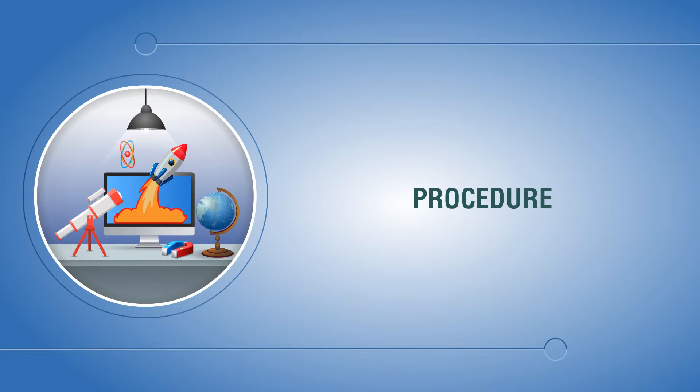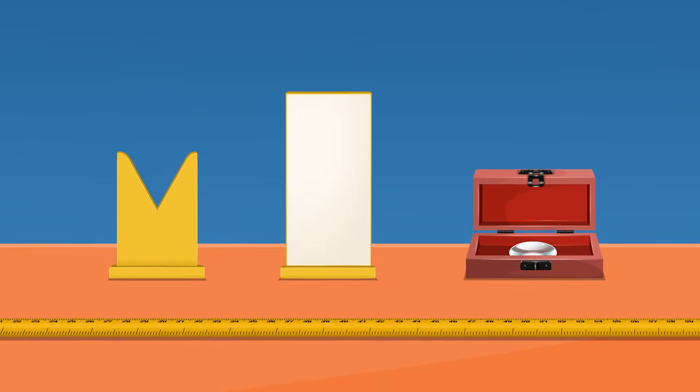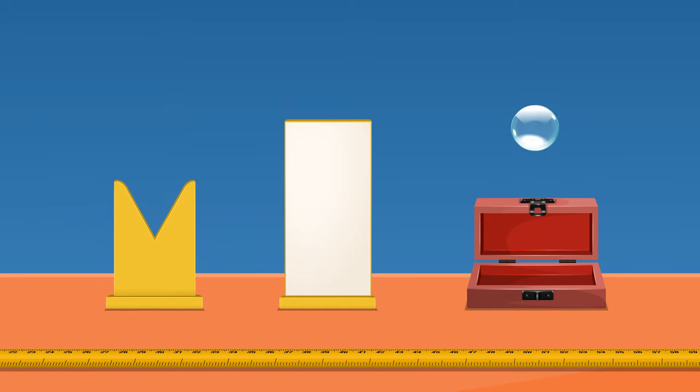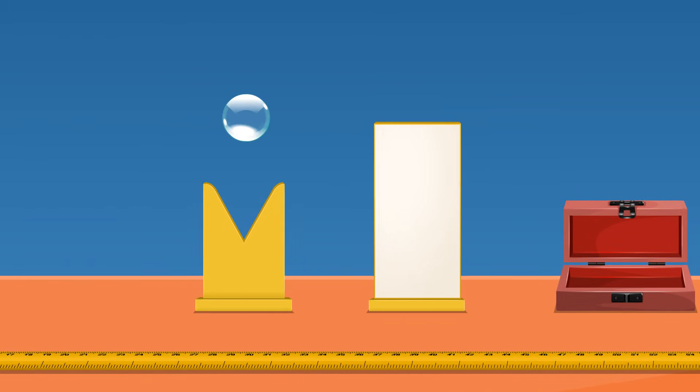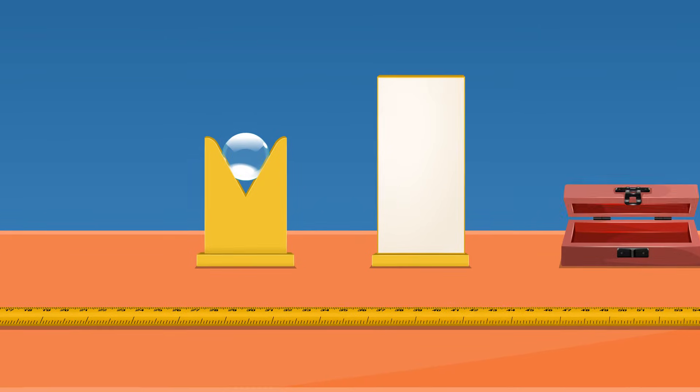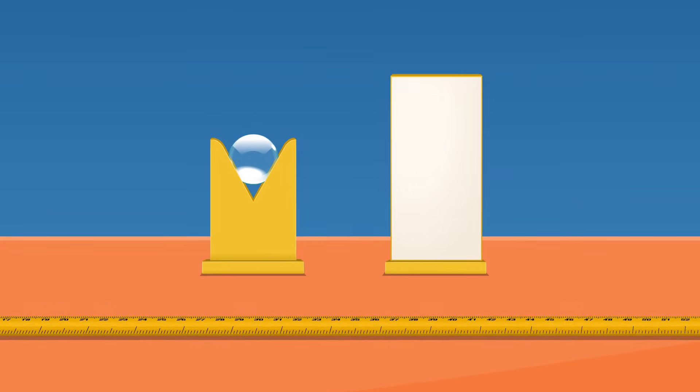Procedure: Take a thin convex lens. Place the convex lens vertically on a lens holder kept on a table.